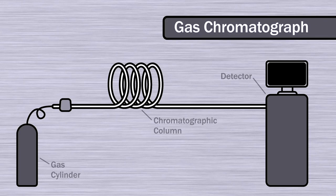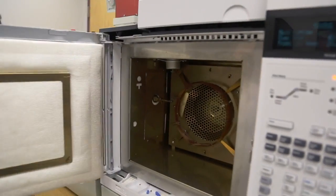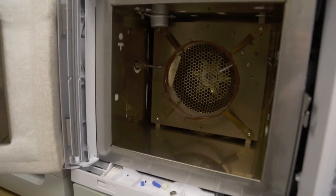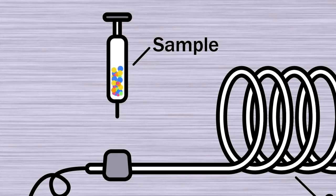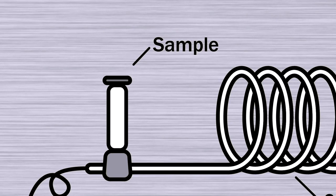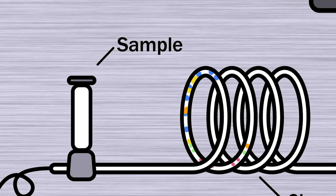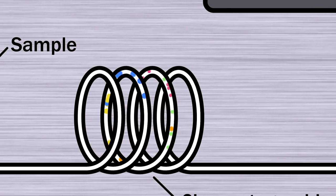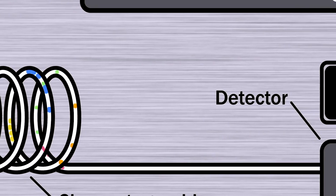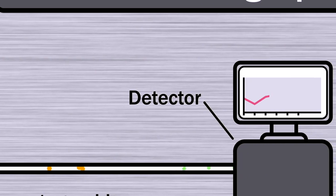Within the machine is a narrow tube called a column. Each constituent moves through the tube at a different rate depending on its mass and chemical structure. A detector at the end of the tube measures when and how much of the compound exits the tube.